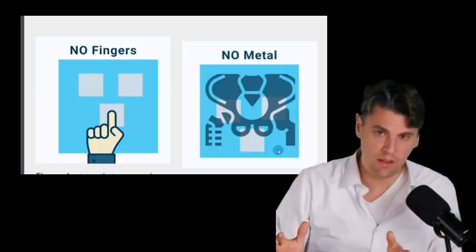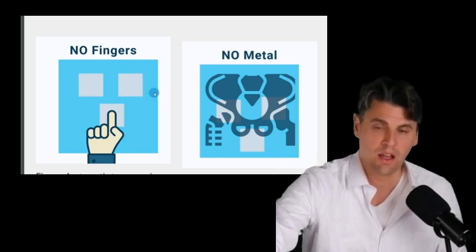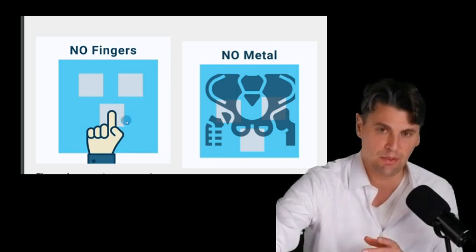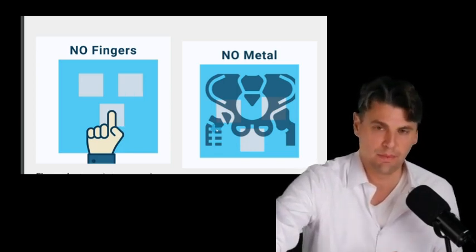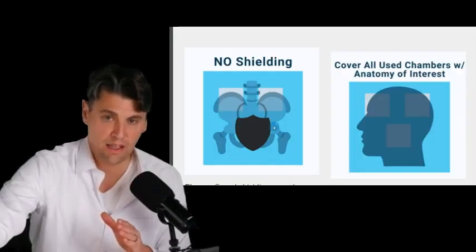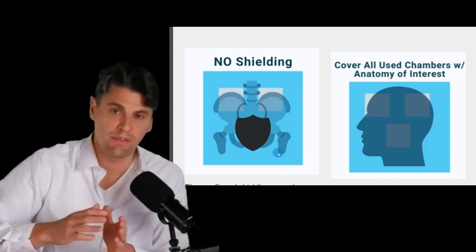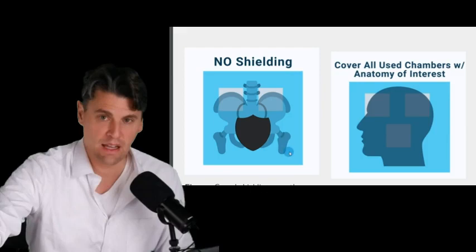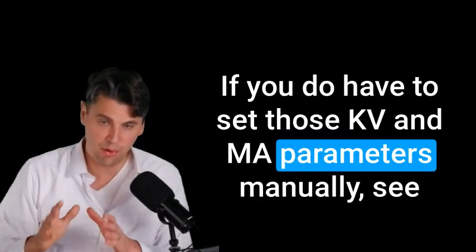In our AEC video, we go through all the details. On the outside of your system, you can actually see where those chambers are. And you want to make sure your anatomy is completely contained within those chambers. So don't try and image a little finger that's only going to take out part of the chamber. And don't put a piece of metal in there because you're going to get a spurious reading. Also, don't use gonad shielding in AEC. Gonad shielding is something we have separate video on, which is really phasing out in radiography in modern times.